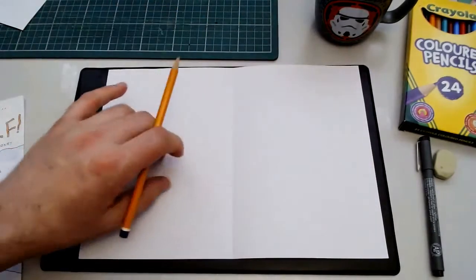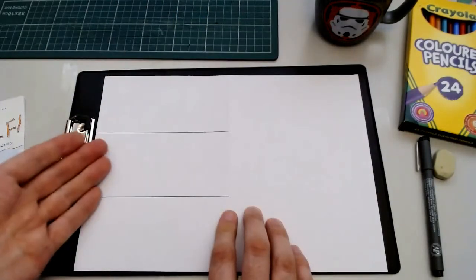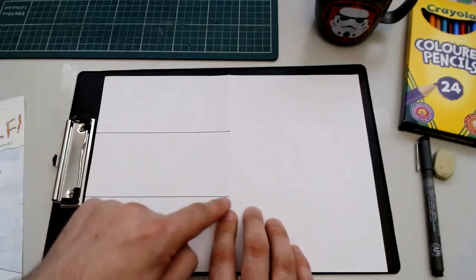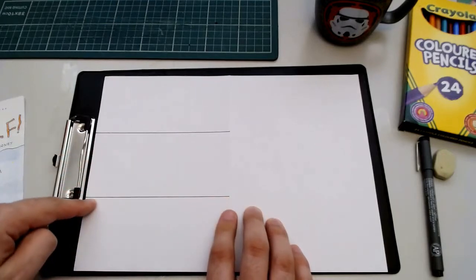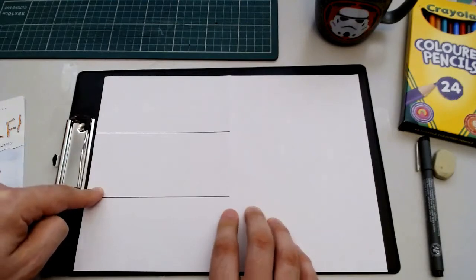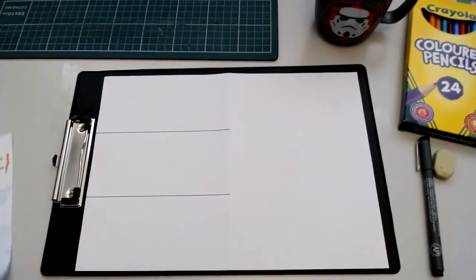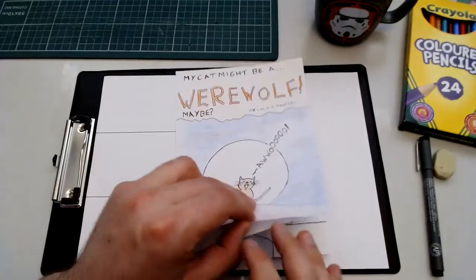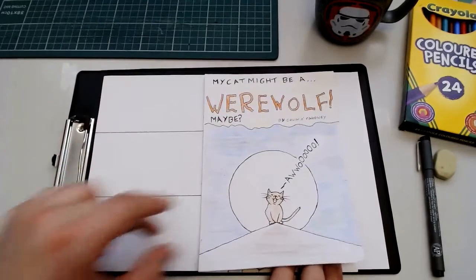So then I'm going to use my ruler to line those in. So this is what you'll end up with. I've done it nice and heavy in ink so you can see it clearly on the page. And I've got three panels marked out on my comic.